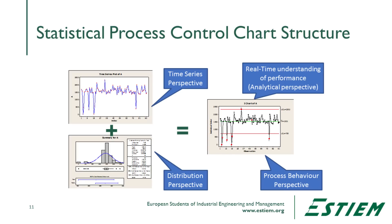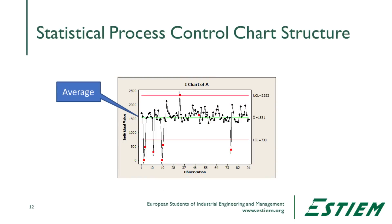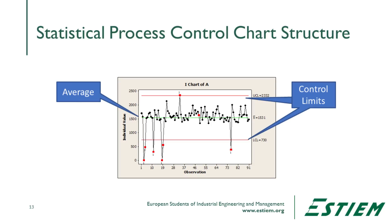In this process behavior perspective, the green line at the center is the average of the observations. The red lines above and below are the upper and lower control limits — plus or minus three standard deviations. This is the summary of all the statistics we have observed. In the center we have the time series perspective, where each time increment is divided, and some red dots represent unusual behavior patterns based on the observed data.